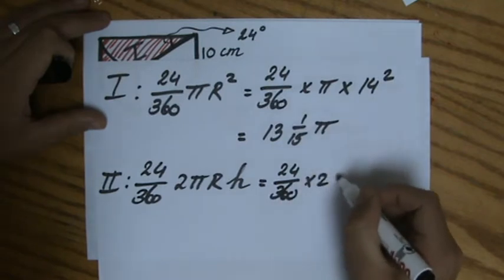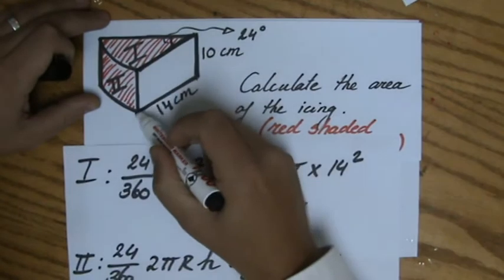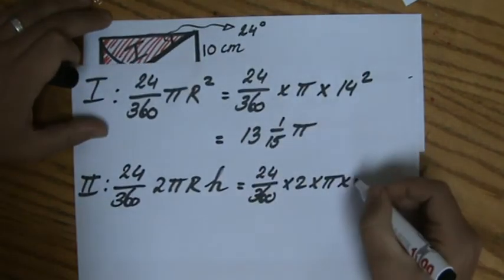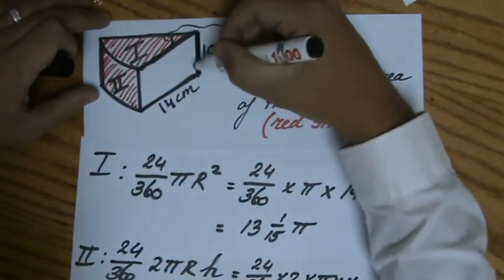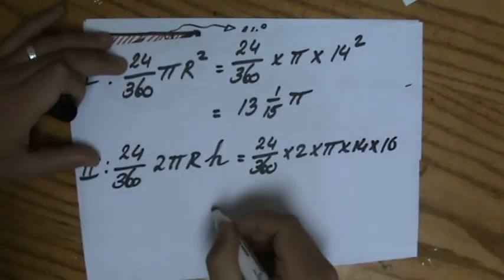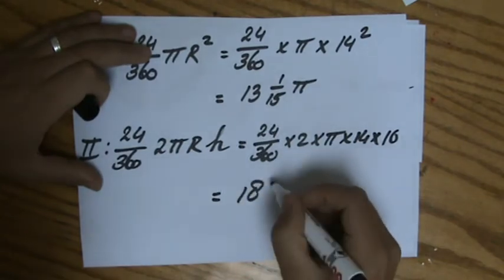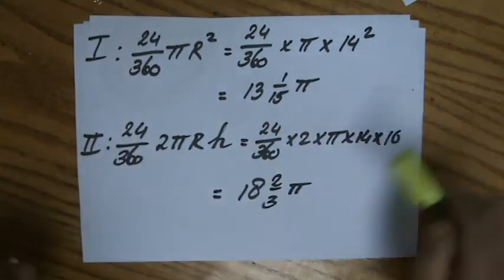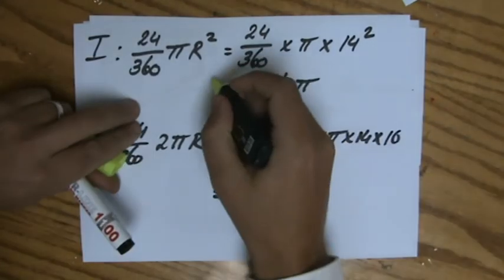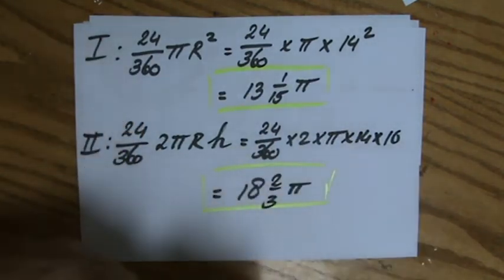However, I'm not interested in the entire curved surface area. I'm only interested in a part of it, which part? 24 out of 360. Now I'm going to fill in some blanks: 24 over 360 times 2, times π. What is the radius? That is still 14. And what is the height? That will be 10. If I work that out and leave it in terms of π, it's going to be 18 and 2/3 of π.